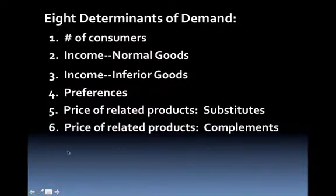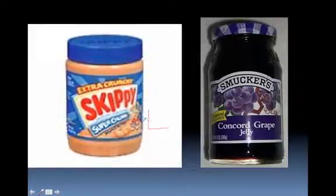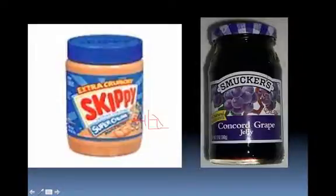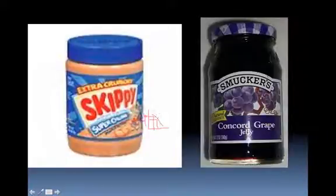Number six is price of related goods — complements. These are goods that you tend to buy together. Take peanut butter and jelly as the classic example. If the price of peanut butter is $4, people tend to also buy jelly. But if there's a big peanut shortage and the price goes up to $6, the quantity demanded of peanut butter drops. What do you think the demand for jelly is going to do? It's going to decrease. So a price change for peanut butter meant a change in demand for jelly.